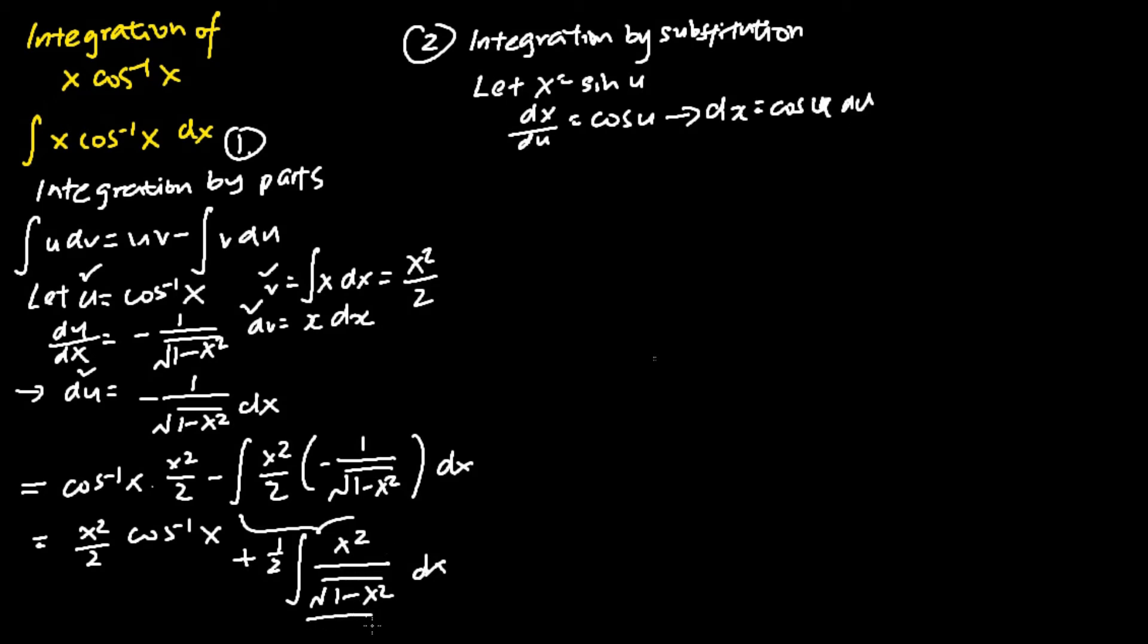I will now perform the change of variables for the integral of x square over square root of 1 minus x square dx. I will get the following. I will leave the first term as it is.